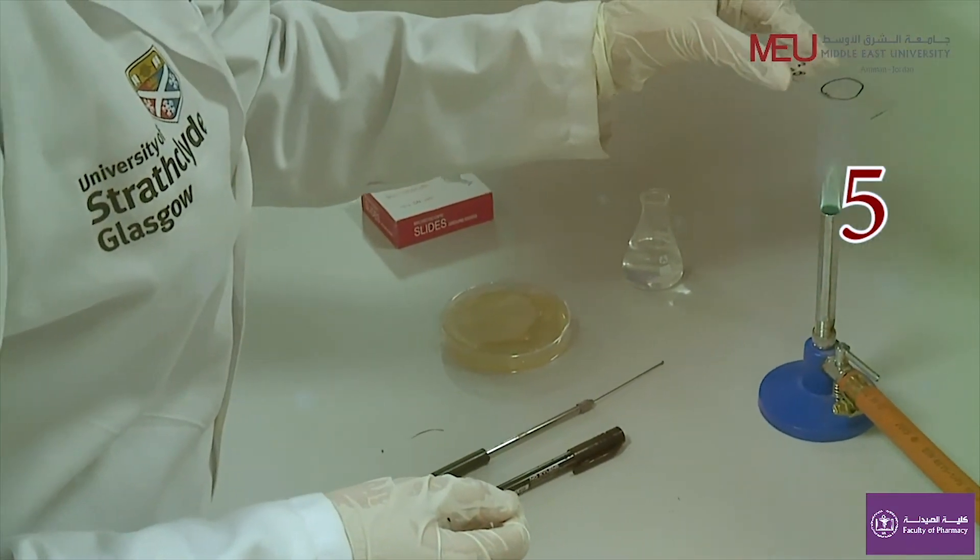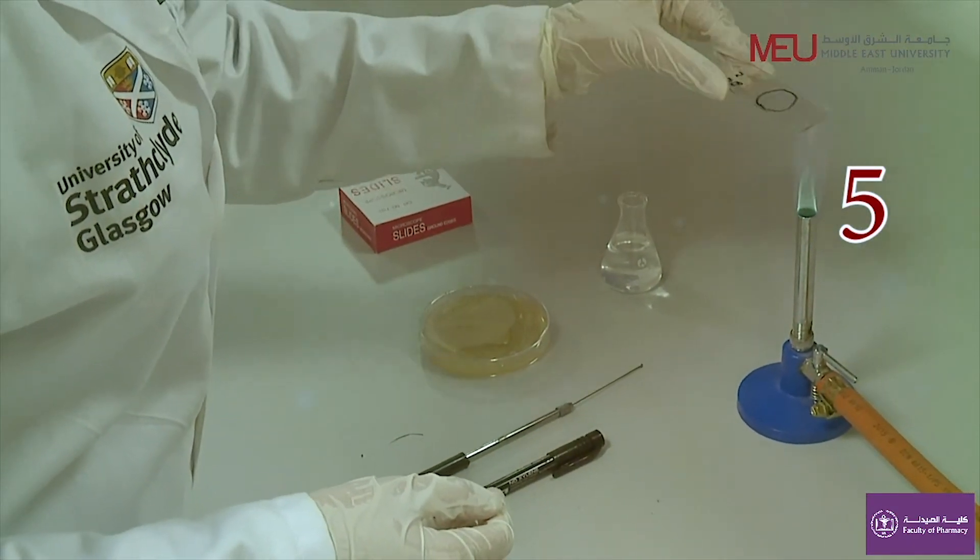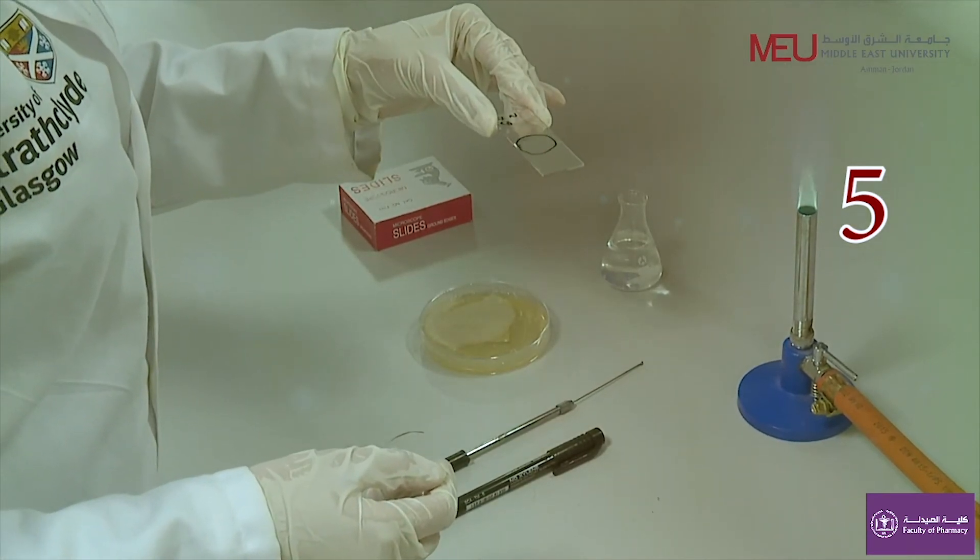Once dried, heat fix the smear to the slide by passing the bottom of the slide through the tip of the Bunsen burner flame two to three times.